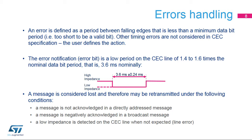If a BTE or BPE error is detected, the CEC peripheral notifies the other followers, and primarily the initiator, by generating an error bit — a low period on the CEC line of 1.4 to 1.6 times the nominal data bit period, that is, 3.6 milliseconds nominally. A message is considered lost, and therefore may be retransmitted, if: it is not acknowledged in a directly addressed message, it is negatively acknowledged in a broadcast message, or a low impedance is detected on the CEC line when not expected — a line error.